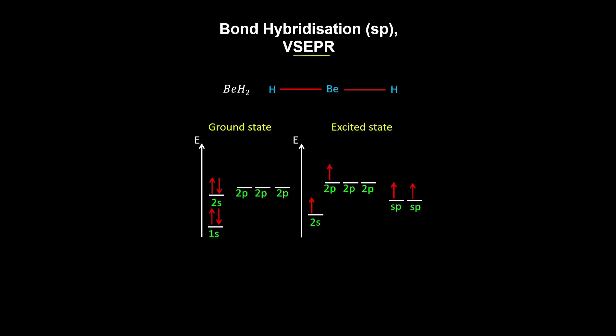Valence-shell electron pair repulsion theory uses Coulombic repulsion between the electrons as a basis for predicting the geometry of a molecule or a polyatomic ion.